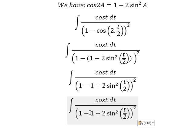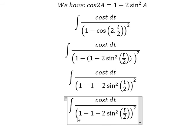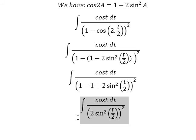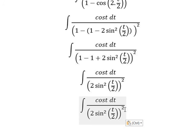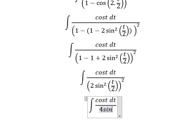The 1 minus 1 terms cancel, and with the power of 2 here we get 4sin⁴(t/2).